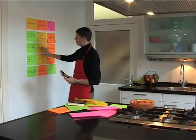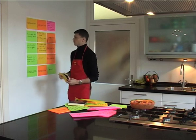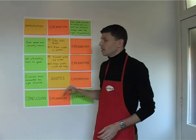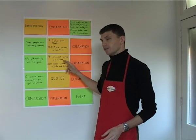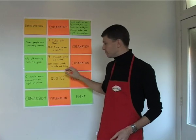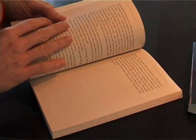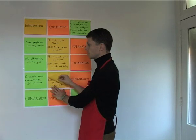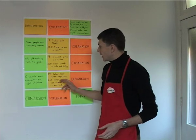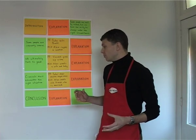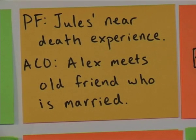In the next body paragraph I'll find similar quotes to support the statement that they turn to good: Vincent gives up crime, and Alex wants a wife and a baby. In the third body paragraph we're going to find quotes supporting that criminals must encounter the right situation: Jules has a near-death experience, and Alex meets an old friend who is married and finds a picture of a baby. These are the situations that make them turn to good.